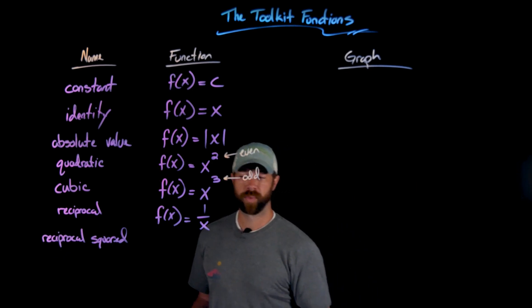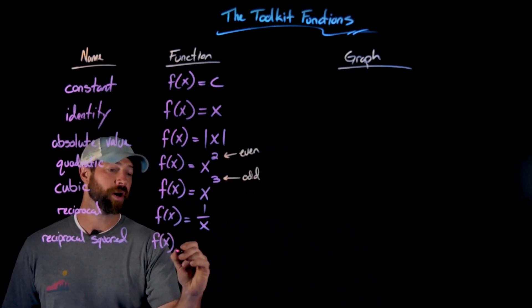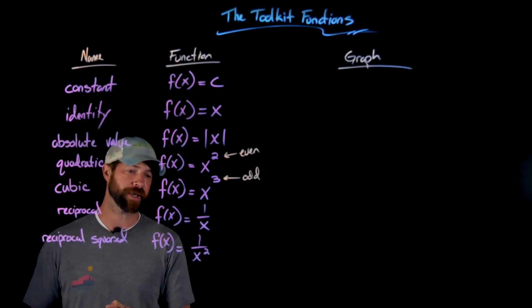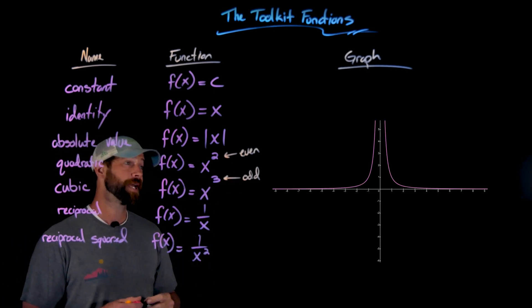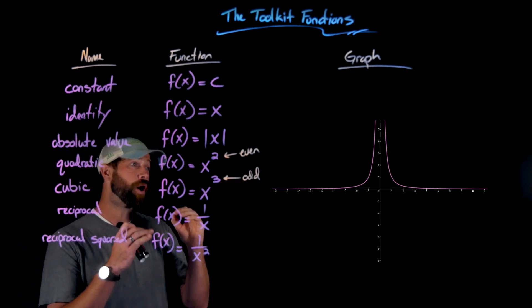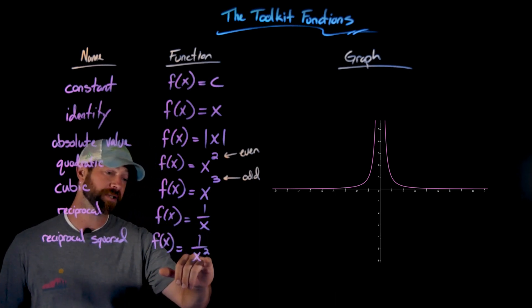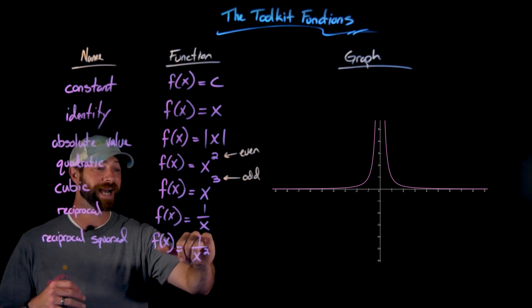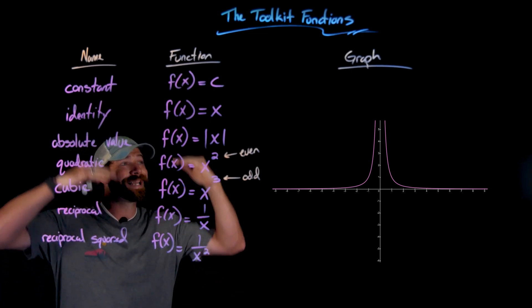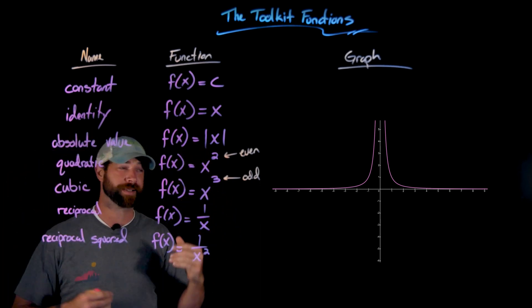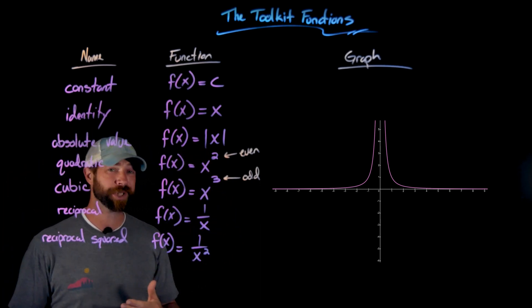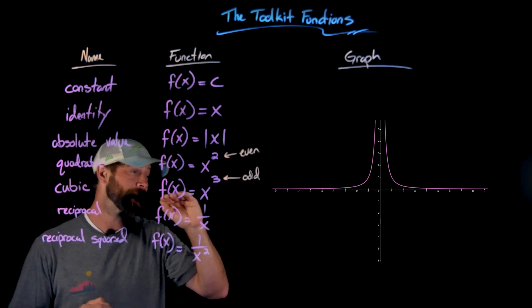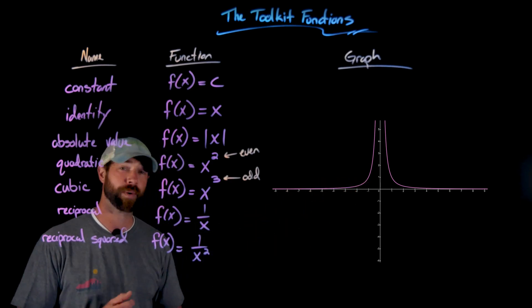We then have the reciprocal squared function, which is f(x) equals one over x squared. This is very similar in a lot of ways to the reciprocal function, but you'll notice some key differences. Importantly, all of these output values are positive—that's because of this squaring for the x squared. We have the same pieces that we had for the reciprocal function, though now we're both above the x-axis with outputs that are positive. As with the previous conversation, we still have a vertical asymptote at x equals zero and a horizontal asymptote at y equals zero.